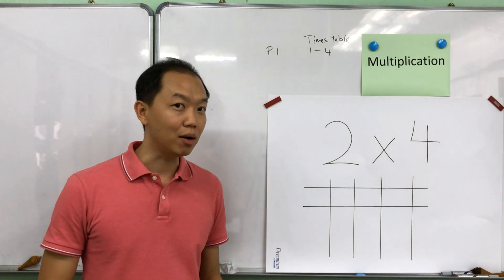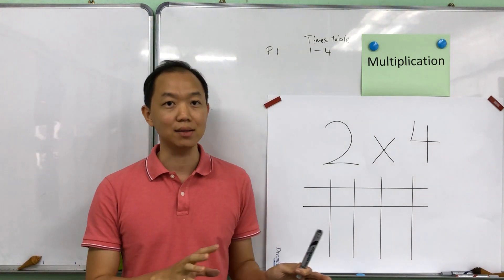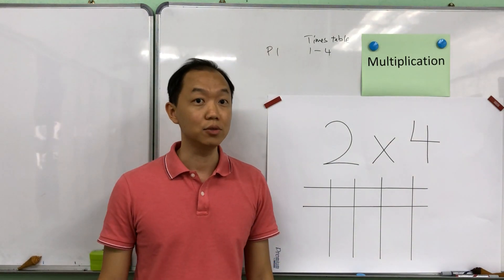Hello, this is the hack for multiplication. Now there are two parts to this segment. We actually have the first part for P1 and then the other part will be for P2.